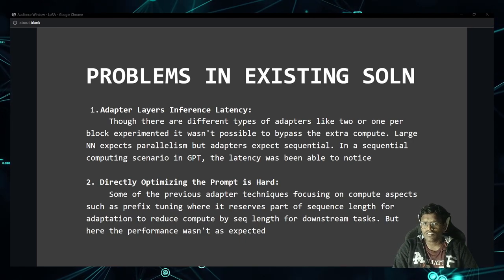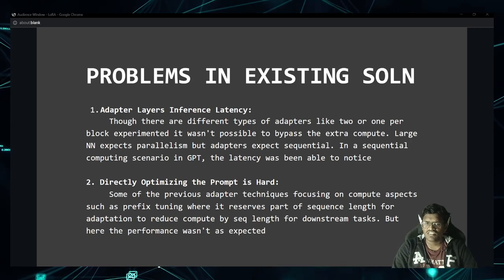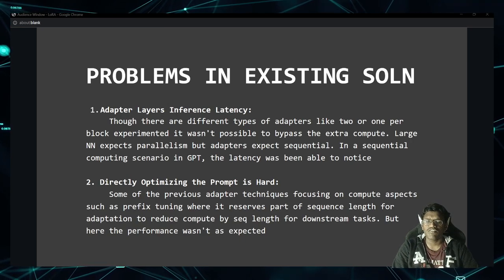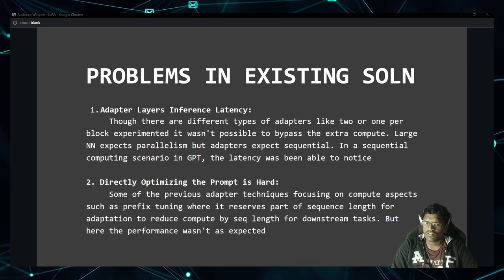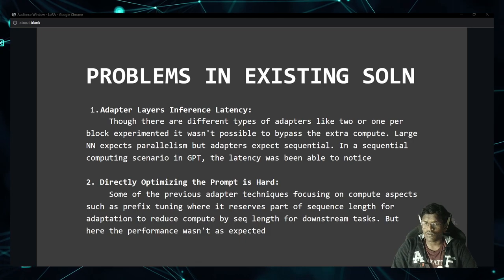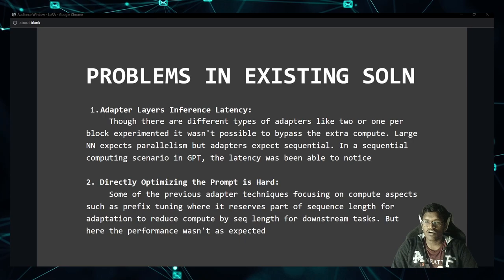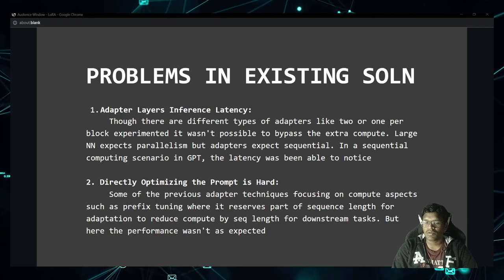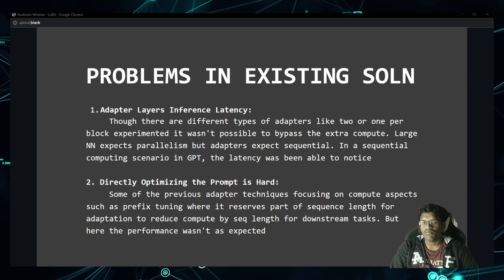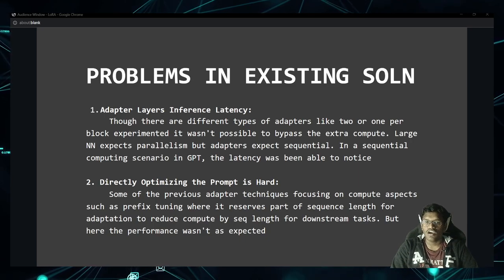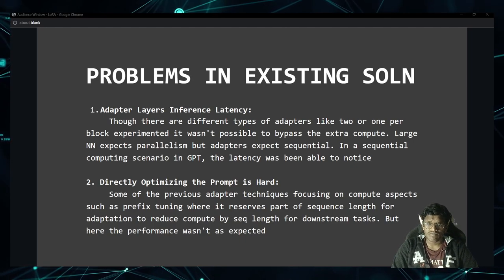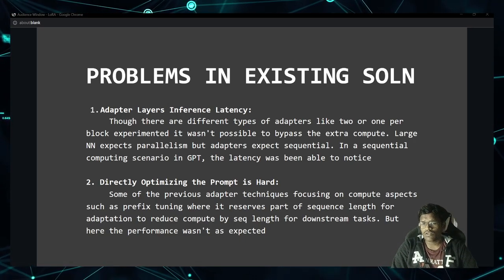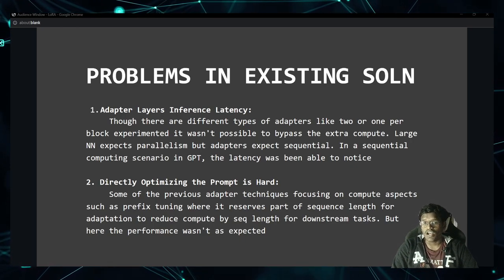Coming to problems in existing adapter solutions: first, adapter layers introduce inference latency. There were different types of adapters — two adapters per block, one per block — but the extra computation was an issue. Large neural networks expect model parallelism for faster computation, but adapters require sequential processing. In a sequential computing scenario without parallelism in GPT, they noticed quite significant latency.